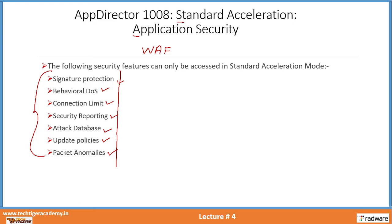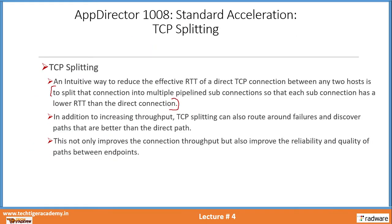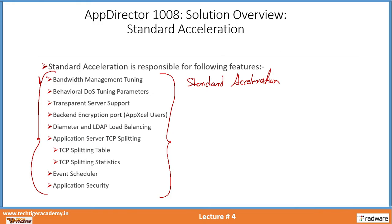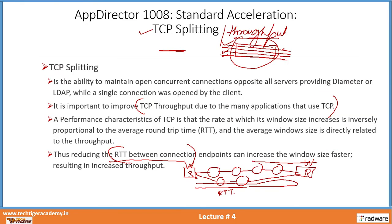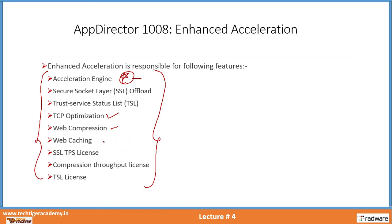Now let us discuss about enhanced acceleration. Those were the features in standard acceleration. Enhanced acceleration also has a pack of features, and in fact enhanced acceleration is far more feature-rich than standard acceleration. The features in enhanced acceleration include: SSL offloading, trust service list, TCP optimization, web compression, web caching, TPS licensing upgrade, TLS license, and compression throughput licenses.